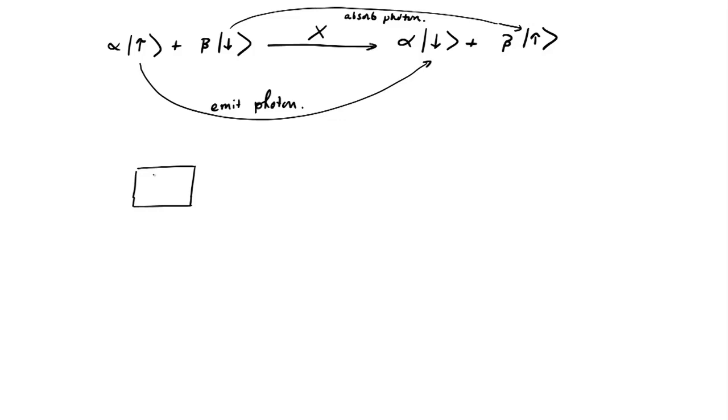k photons. And now we are in one of two cases. Either a photon got emitted or it got absorbed. So either we ended up with k plus one photons, or we ended up with k minus one photons.